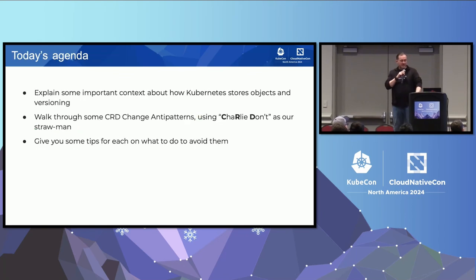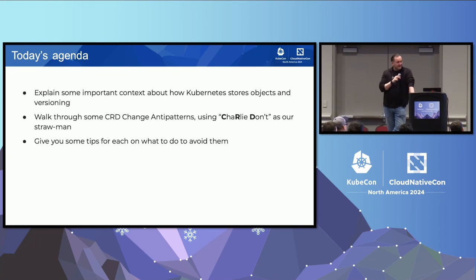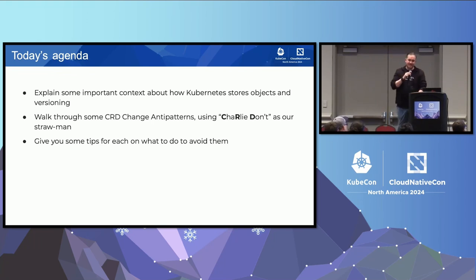Today's agenda: I need to explain a little bit about how Kubernetes stores objects and versioning for you to understand why a lot of these things are necessary, then walk through some CRD change mistakes using my poor sap Charlie Don't as the straw man, and then give you some tips on what to do to avoid them. I did choose Charlie Don't specifically because it has the letters CRD in it.